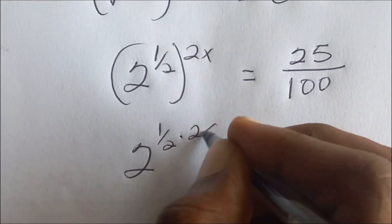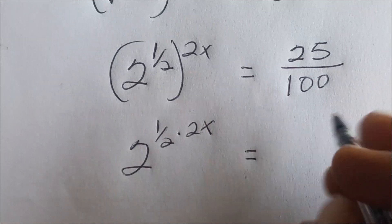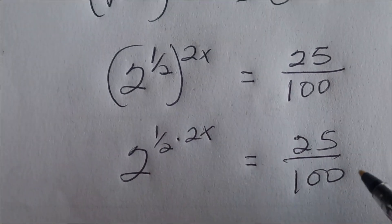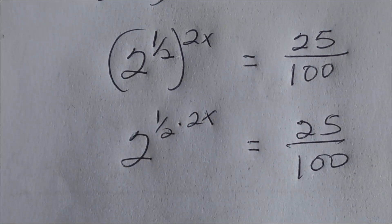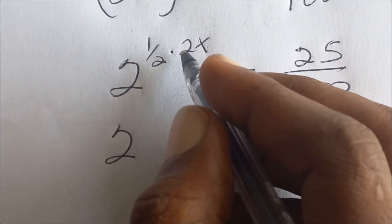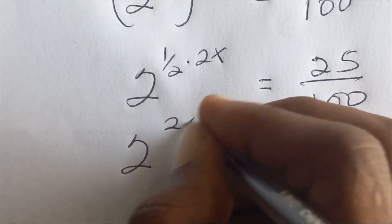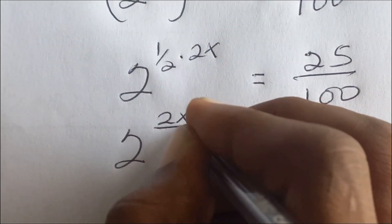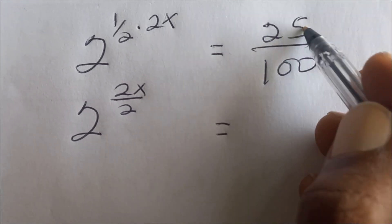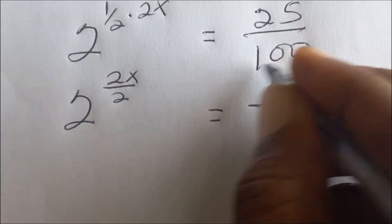Multiplying by 2x, which is equal to 25 on 100. And 2 exponent half times 2x is the same as 2x on 2, which is equal to — now this 25 goes into itself once and then it goes into 100.